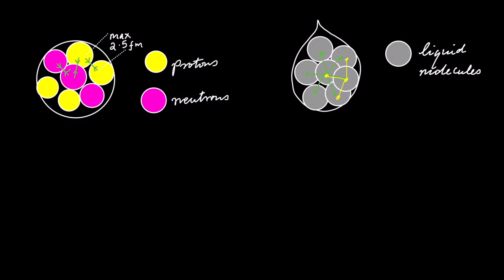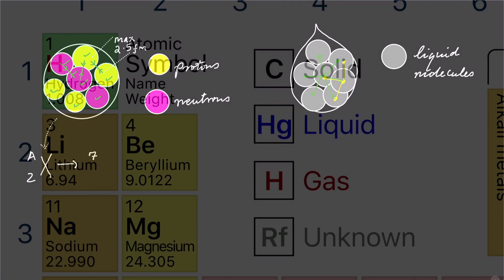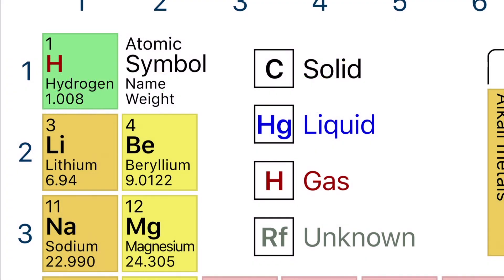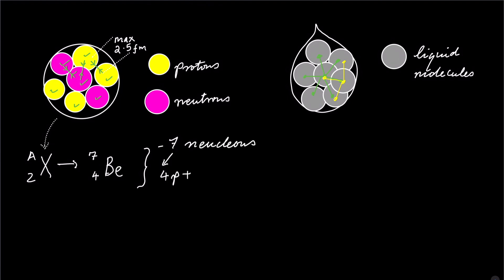In this example, our atom has 7 nucleons, 4 of which are protons. Therefore, we can check that and verify it to be helium-7 with 4 protons and 3 neutrons.